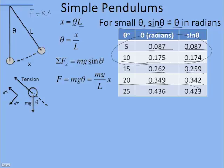So that means I can replace sine theta with theta. And then up here, theta is x over L. So if I put that into there, I get mgx over L, and mg over L is a constant times x, just like the spring mass system.